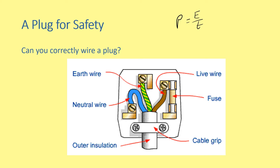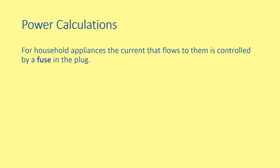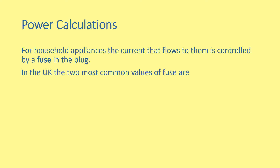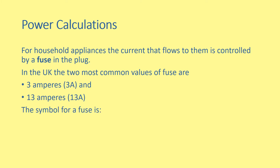The fuse values can depend on the power rating of the appliance and the voltage across it. It's important that all the wires are connected correctly to make sure the appliance operates safely. The wiring of the plug is a National 4 outcome, however aspects of this are included in the National 5 course. For household appliances, the current that flows to them is controlled by the fuse in the plug. In the UK, the two most common fuse values are 3 amperes and 13 amperes. The symbol for the fuse looks like a resistor but has a line straight through it.